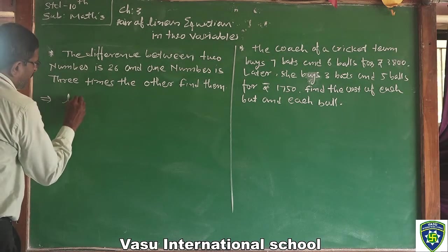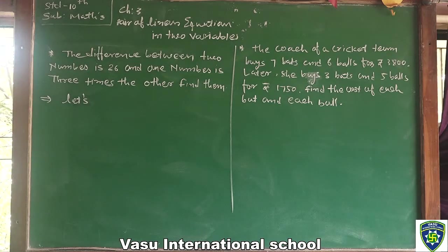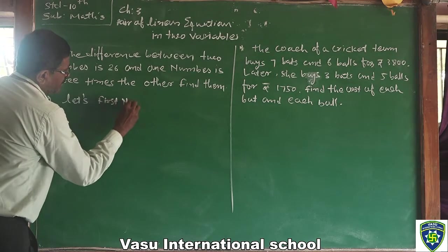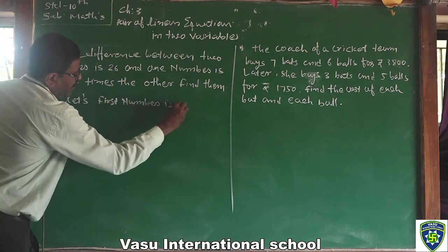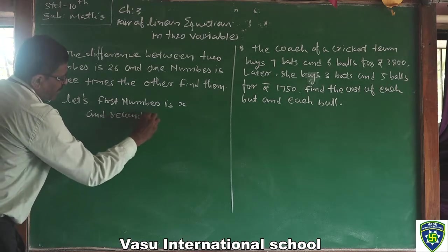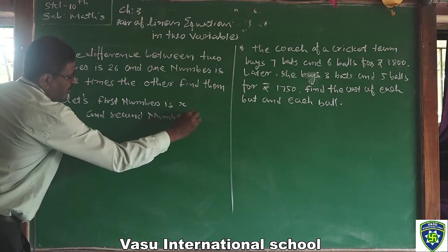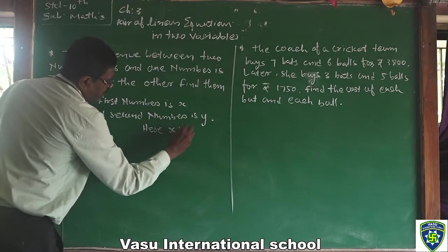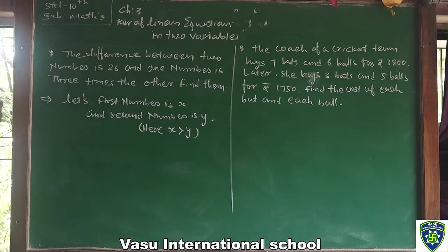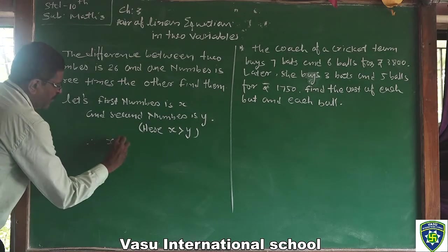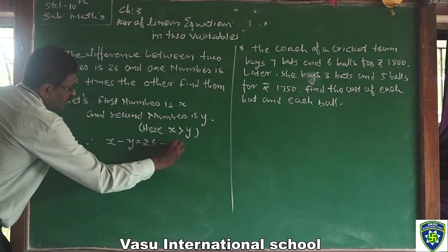First of all, let the first number be x and the second number be y, where x is greater than y. Then the difference between the 2 numbers: x minus y is equal to 26. This is Equation 1.